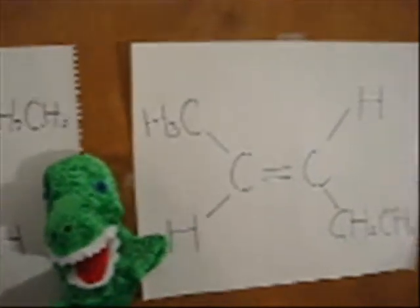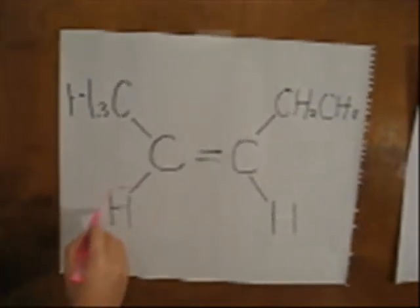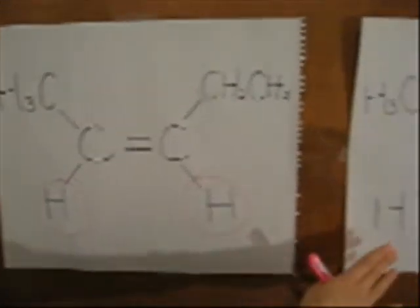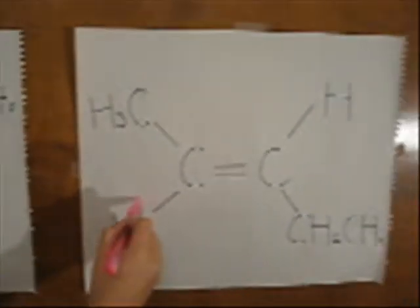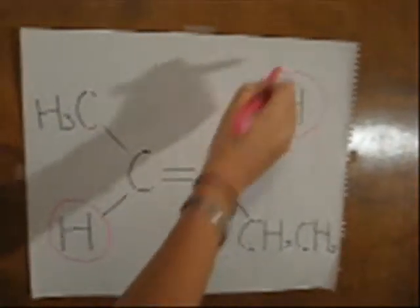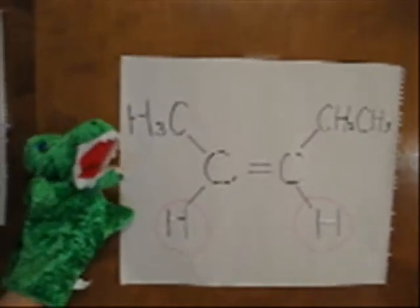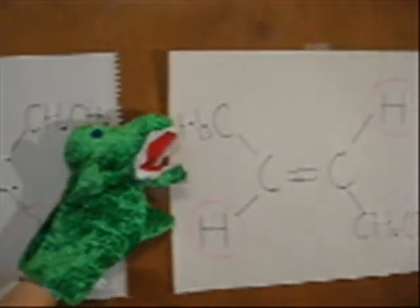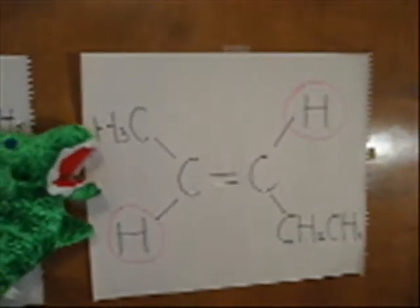Can you tell the difference between these pictures? In the left drawing, the hydrogens are in the same side and in the right drawing, hydrogens are in the opposite side. Good, so this is cis isomer and this is trans isomer.